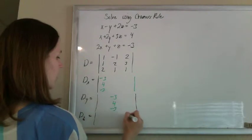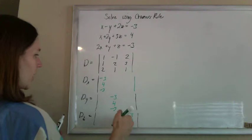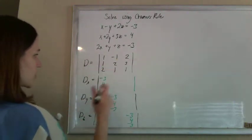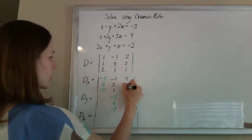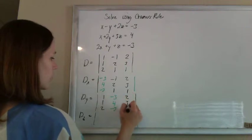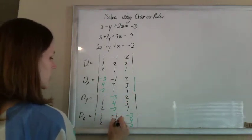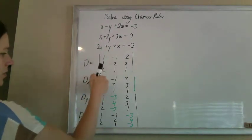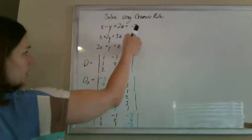So that 3, negative 4, negative 3 is just going to work its way across, and the rest of this original matrix will stay the same. So negative 1, 2, 1, 2, 3, 1, 1, 1, 2, 2, 3, 1, 1, 1, 2, 3, 1, 1, 1, 2, negative 1, 2, 1. So it's that original matrix with the x's replaced, and the y's replaced, and the z's replaced with that answer column.